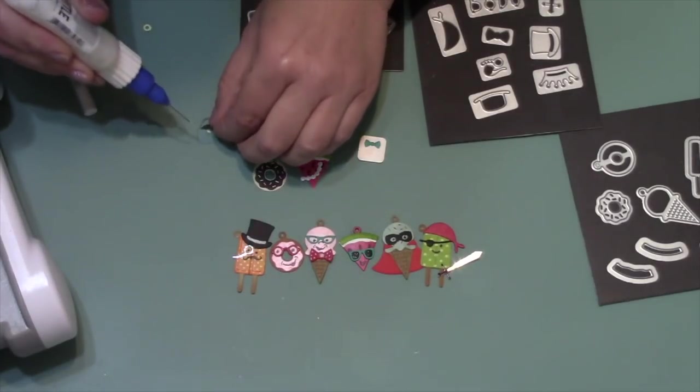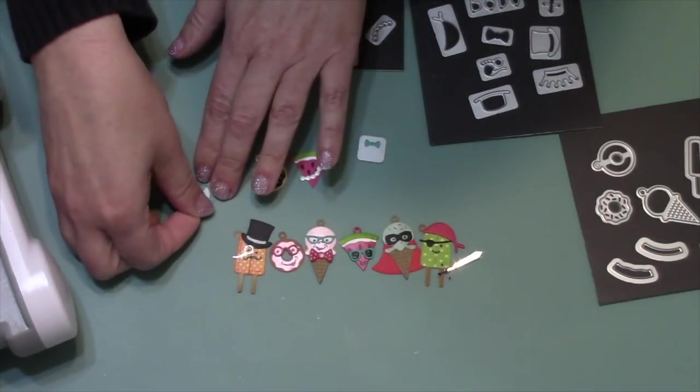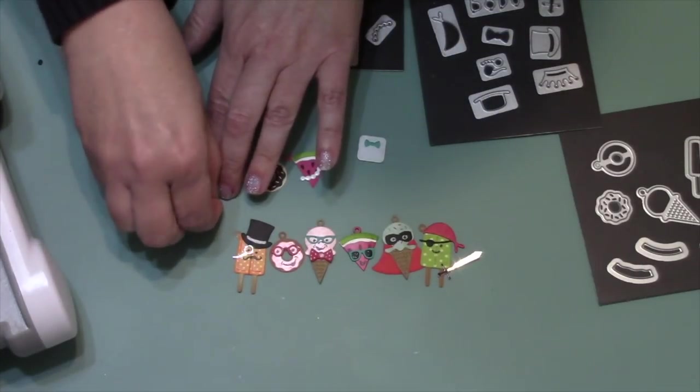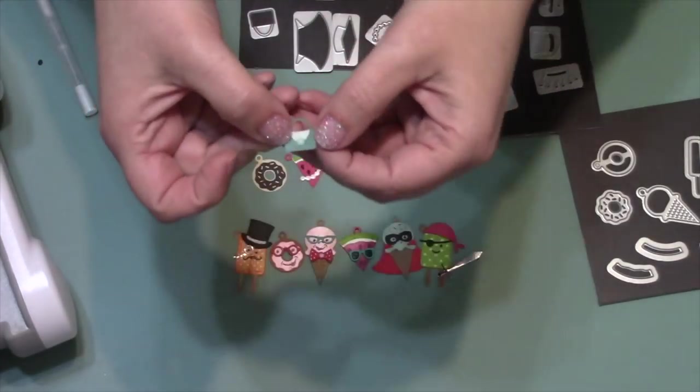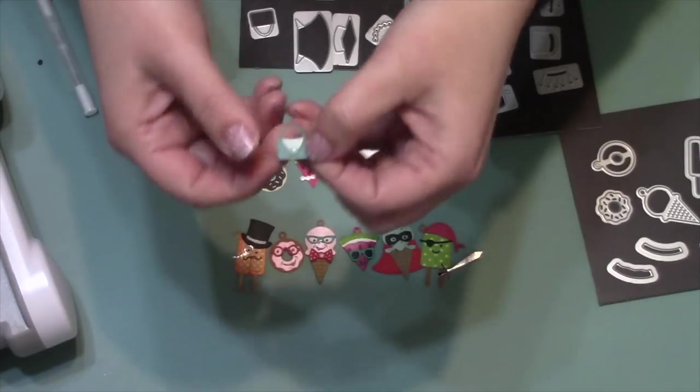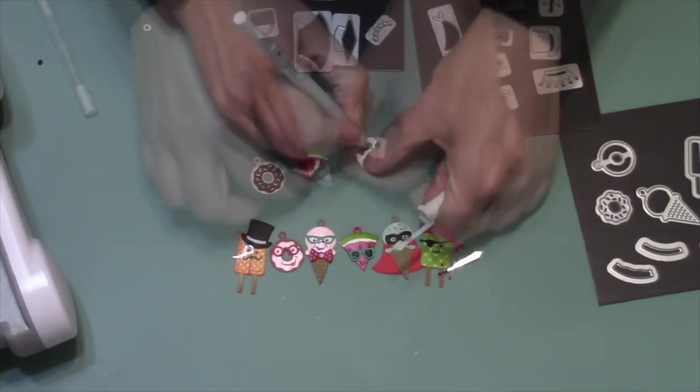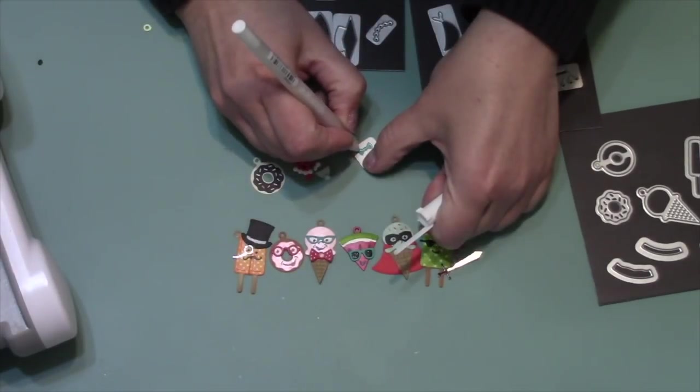Then I just hold that little flap down with a spot of glue. I'm using my Lineco neutral pH adhesive in my fine tip bottle, and we do sell both of those items on our website. Then I like to add just a little rhinestone to kind of complete the look. There is a pillbox hat die in that Tiny Accessories 2 set.